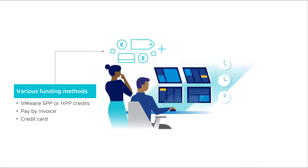There are various funding methods: VMware Subscription Purchase Plan and a Hybrid Purchase Plan. There's also an option to pay by invoice. For smaller environments, it's possible to use a credit card. Talk to your VMware representative to understand what fits your business best. This demo focuses on purchasing through VMware directly, though there are also options to buy through AWS or use a managed service provider.